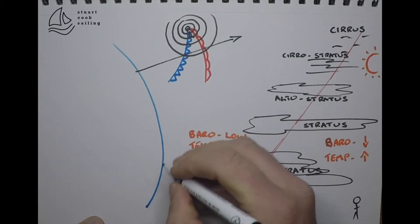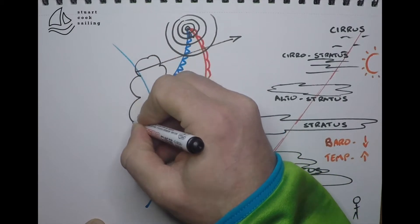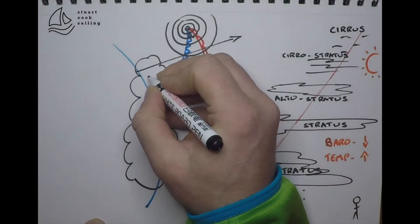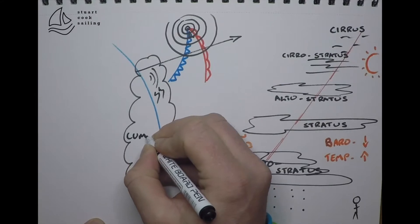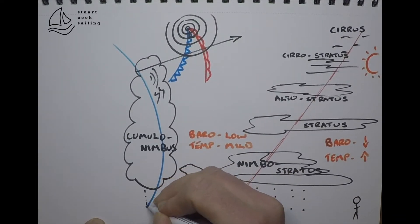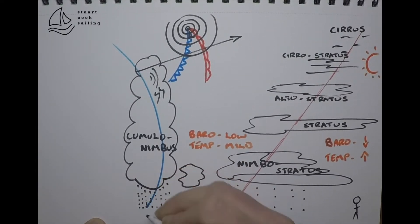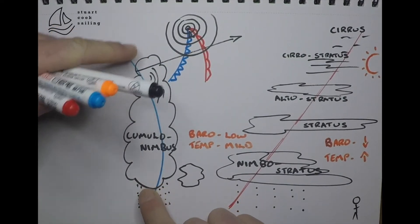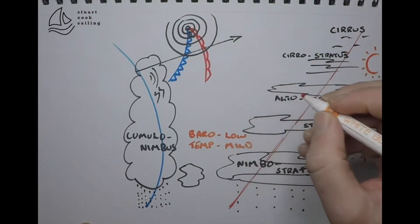What's going to happen next is the cold front is going to hit us and we're going to experience this towering cumulonimbus cloud, maybe a bit of thunder and lightning, but torrential rain, squally conditions, big changes in the wind and huge vertical distance in the depth and height of the cloud there.